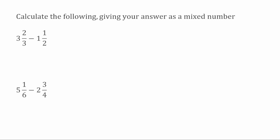For this first example, we've got three and two thirds take away one and a half. The first thing I'm going to do is turn these mixed numbers into improper fractions. For the first one, the denominator stays as thirds. We do three multiplied by three, which is nine, then add on the two, which gives us eleven. So that first fraction is eleven over three.